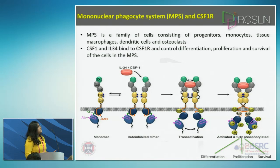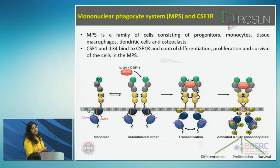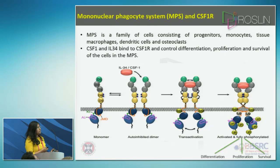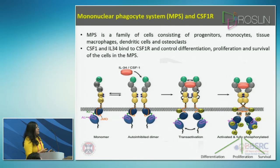These cells are controlled by the interaction between three molecules: CSF1, that is colony stimulating factor 1, and IL34. These two are cytokines which bind to the receptor, colony stimulating factor 1 receptor, which is a type 3 tyrosine protein kinase receptor. This interaction brings about the differentiation, proliferation, and survival of all these cells.